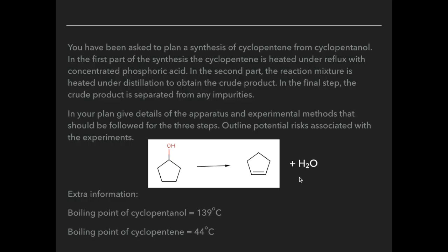Some extra information: the equation shows an elimination reaction where the concentrated phosphoric acid removes a water molecule by taking out the OH group and an H from an adjacent carbon, putting a double bond in its place to give cyclopentene and water. The boiling points to consider are 139°C for cyclopentanol and 44°C for cyclopentene.